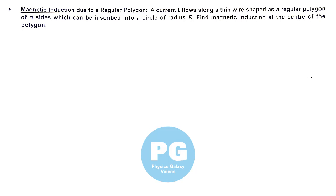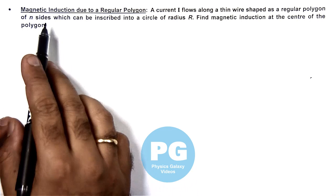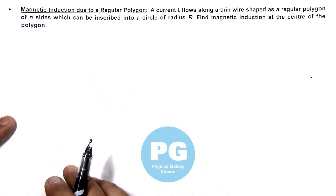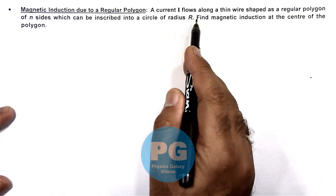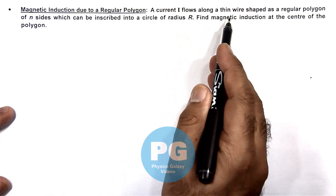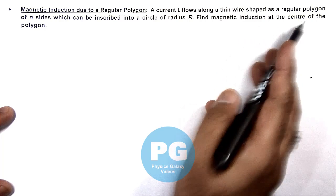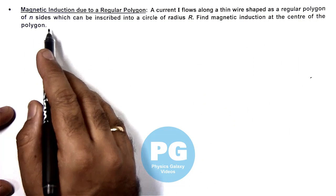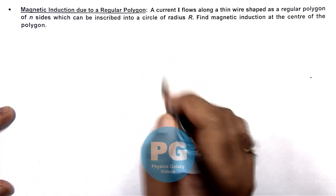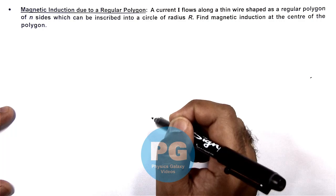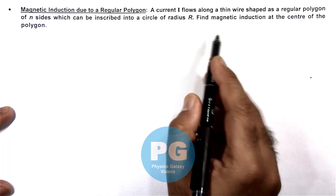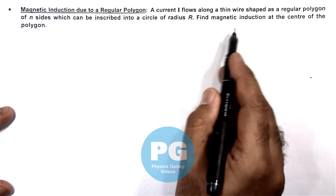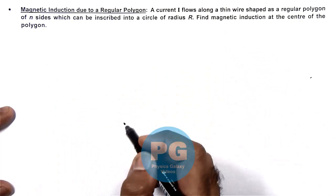In this illustration, we will analyze the magnetic induction due to a regular polygon. We are given that a current I flows along a thin wire shaped as a regular polygon of n sides, which can be inscribed into a circle of radius R. We are required to find the magnetic induction at the center of this polygon.